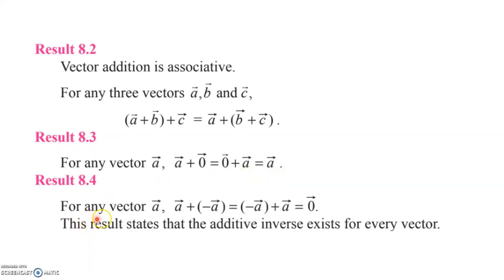For any vector a, vector a plus minus of vector a would be a zero vector, because you will be reversing vector a in the opposite direction. So it will come back with the same magnitude and become a zero vector.